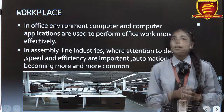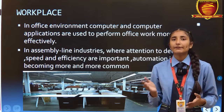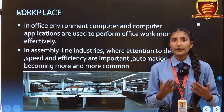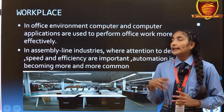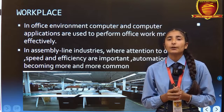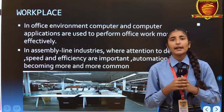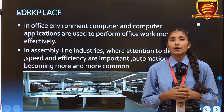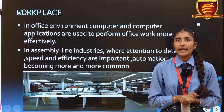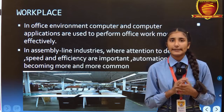Moving further, we will discuss about the use of IT at different workplaces. In offices or industries, IT is used to work more effectively. In offices, it is used for making presentations or doing work more effectively and efficiently. In assembly line industries, IT is used to work the machines and to maintain their speed and efficiency. Automation has become more and more common in industries.